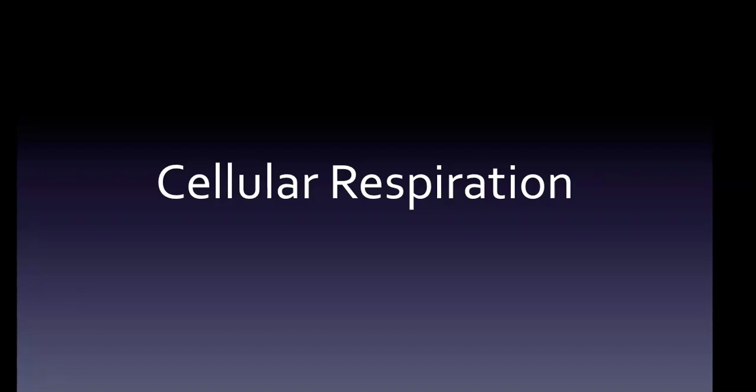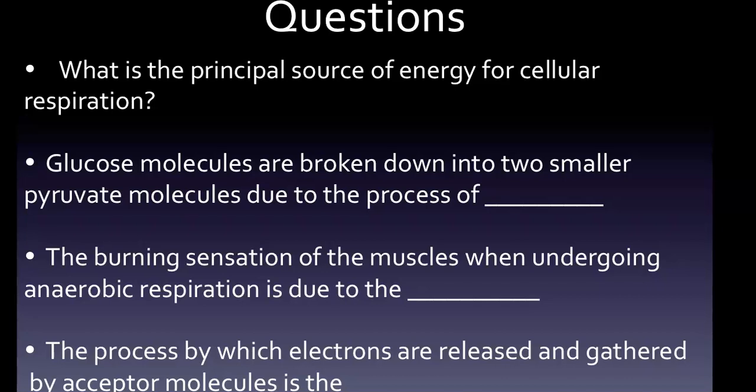Let's see what we need to know about cellular respiration. We have four questions here that will show up again at the end of the video. The questions are: the principal source of energy for cellular respiration; glucose molecules are broken down into two smaller pyruvate molecules due to the process of blank; the burning sensation in muscles during anaerobic respiration is due to what; and the process by which electrons are released and gathered by acceptor molecules is the blank.